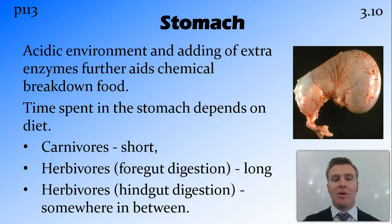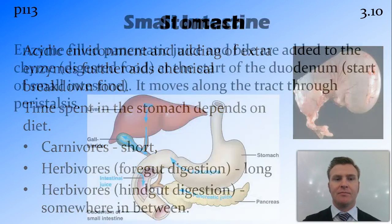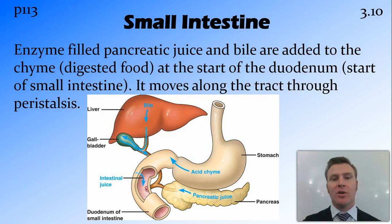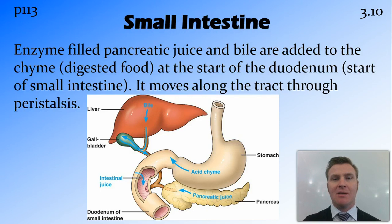We'll look a bit later at the difference between foregut and hindgut digestion. Once it gets into the small intestine, what it's actually called at this point is chyme — partially digested food mixed with the acid and enzymes from the stomach. This goes through the sphincter into the duodenum, which is the very first part of the small intestine. In the duodenum, it fills up with pancreatic juice from the pancreas, as well as bile, which is produced in the liver and stored in the gallbladder. Both of these have high levels of enzymes and are also very basic or alkaline, which adds extra enzymes to the chemical digestion and neutralizes the acid from the stomach.